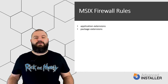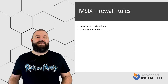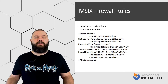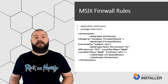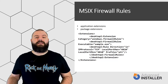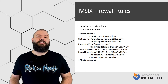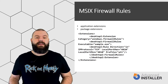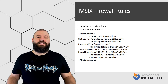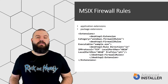So, to add a firewall rule you just have to add the following code in the manifest after the capabilities element. The above code creates an inbound rule for the sample executable present in the package. The rule allows all incoming network traffic using the TCP protocol over port 4810.